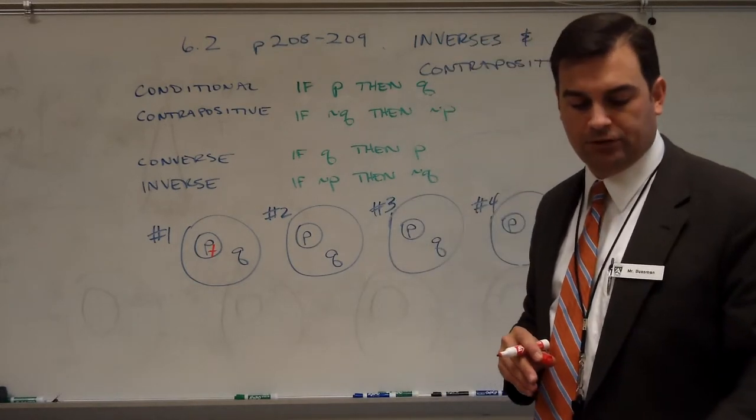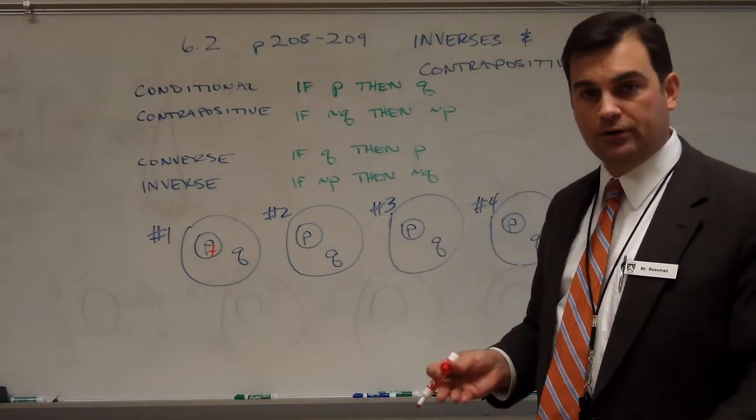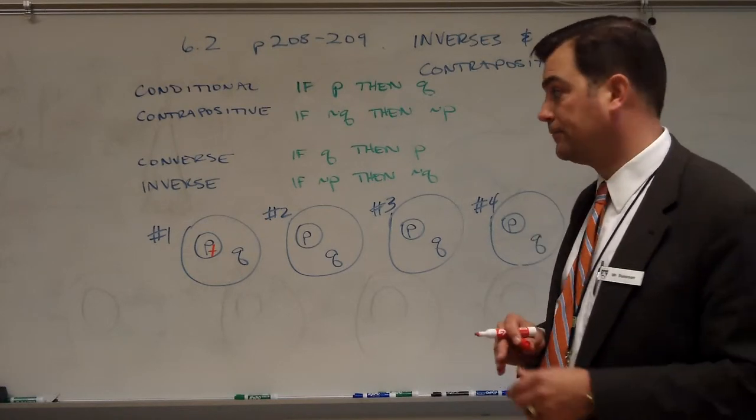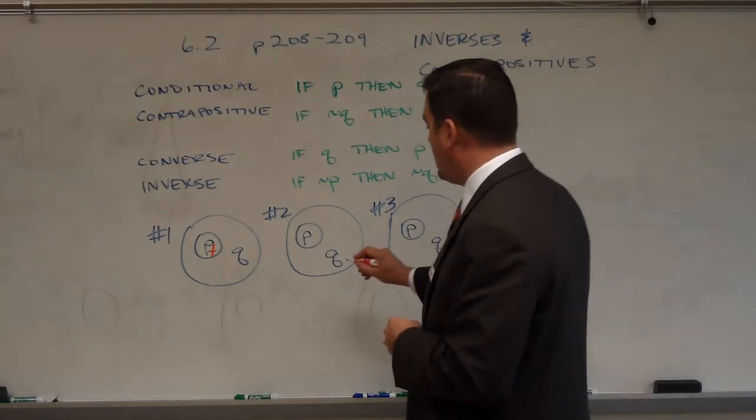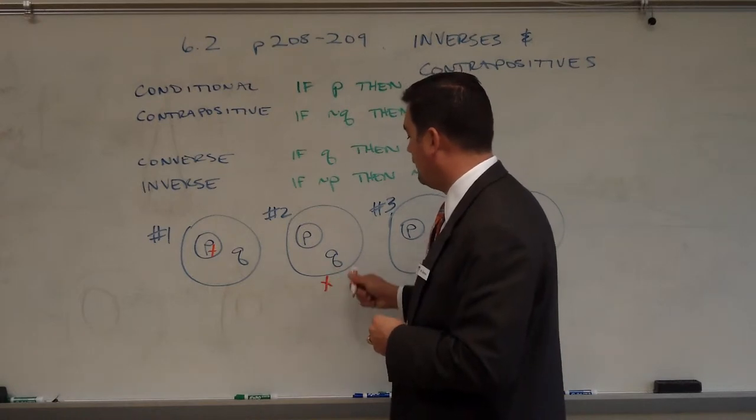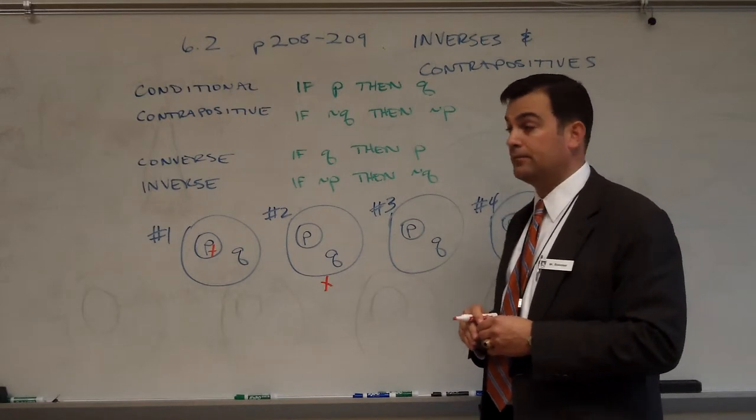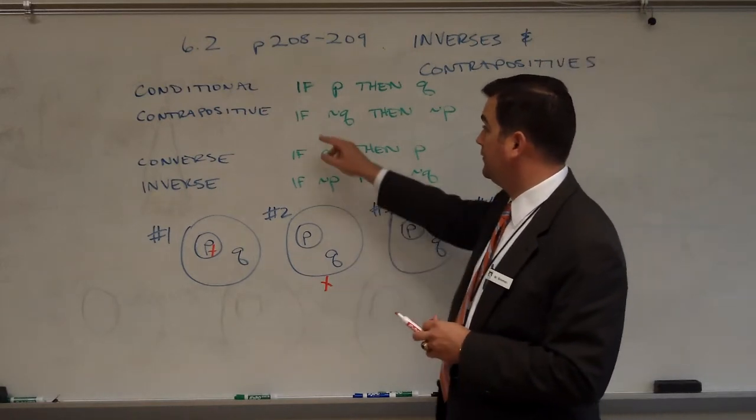Look at example number two. All runners are athletes. Lucia is not an athlete. If Lucia is outside the realm of all athletes, then Lucia is definitely not a runner. And that's the contrapositive.